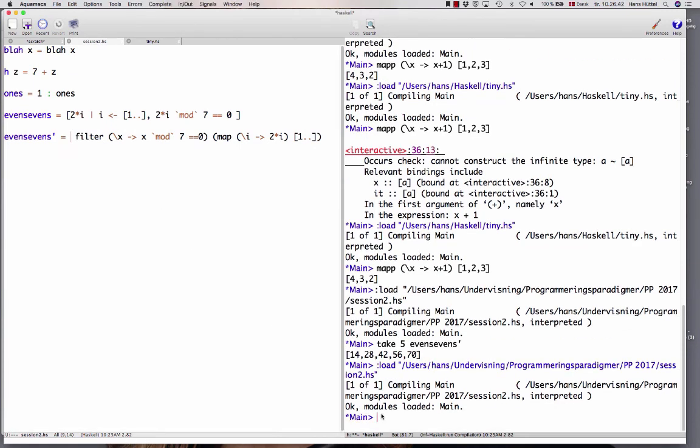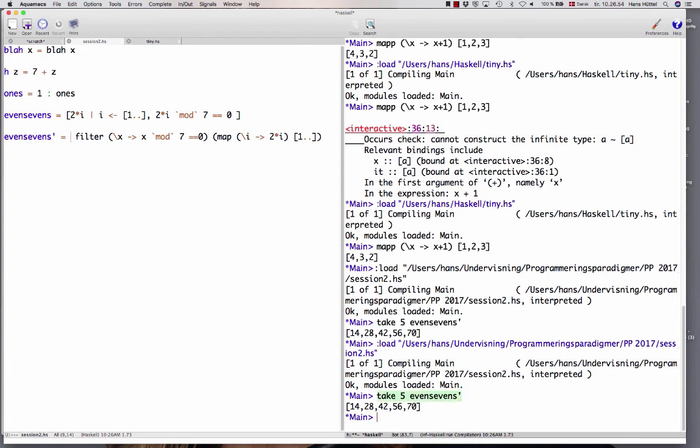So now let's find the first five elements of even sevens prime. What do we get? We get the same list as before. This was the list we got.